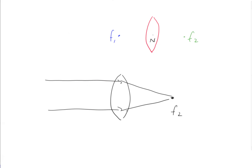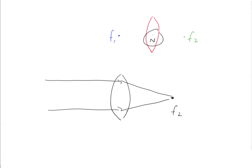So those are our three points. At f1, a point source will pass through the lens and come out as parallel light. At f2, parallel light coming through the lens will be focused to a point. And at n, the nodal point, light passing through doesn't do anything — it just goes straight through the lens.